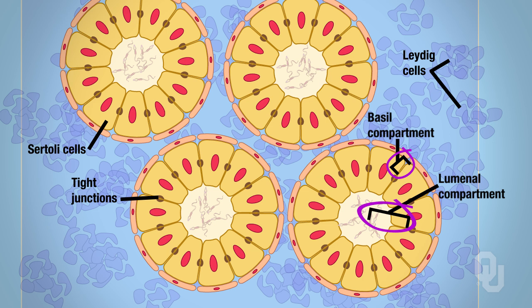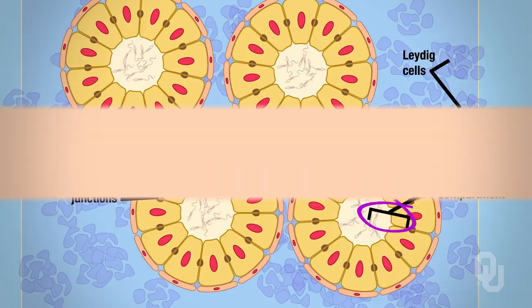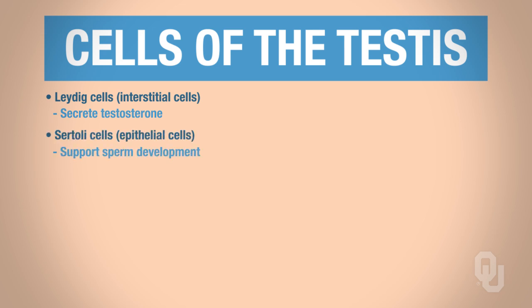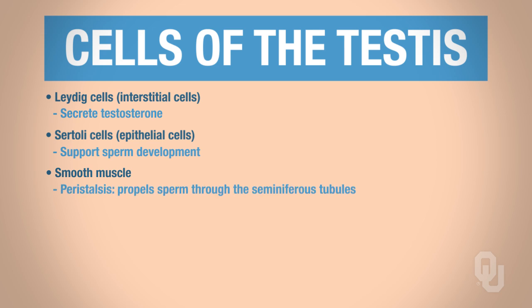Now that you are familiar with the structures, let's focus on their functions. We begin with the Leydig cells, also called interstitial cells. The Leydig cells secrete testosterone. The Sertoli cells support sperm development, or what is referred to as spermatogenesis. The smooth muscle surrounding these Sertoli cells allows for peristalsis. This process is important as it will propel sperm through the seminiferous tubules. That's all fine and dandy that the Sertoli cells produce the sperm, but how do the sperm get out of the seminiferous tubules and out of the testes?